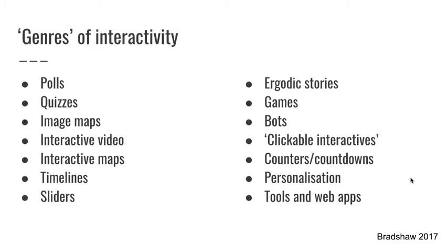Timelines are presentations of chronologies where the user can move back and forth in the chronology of events. A slider is where you might have two images, quite often a before and after, and the user can move a slider to reveal and hide one of the two images. Ergodic stories, games, and bots I'll come onto in the subsequent slides, and I'm going to talk about clickable interactives as well, which is now quite an old name for the general form of creating an interactive story online.